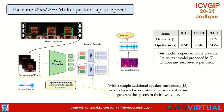We also train a multispeaker version of our network, where a single network generates speech for any speaker. We pass an additional speaker embedding containing voice information along with the face crops. This network is trained on the LRW dataset, which has a vocabulary of 500 words, each spoken a thousand times. We show that the multispeaker network works decently well on the LRW test set.